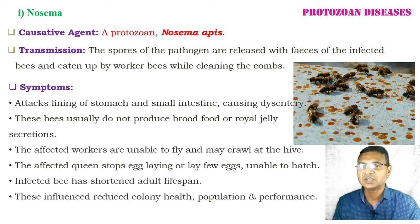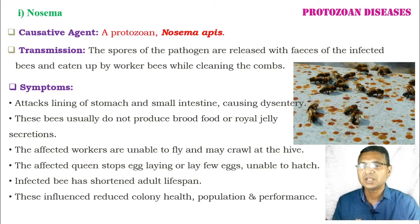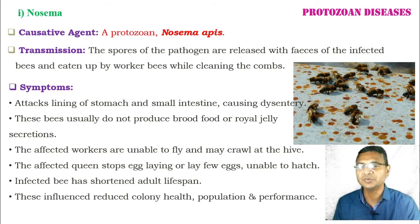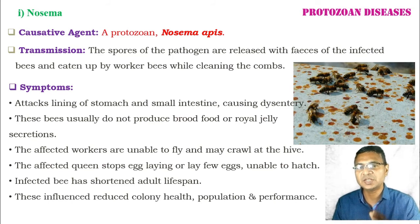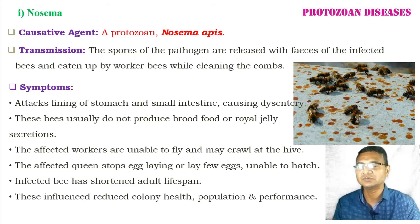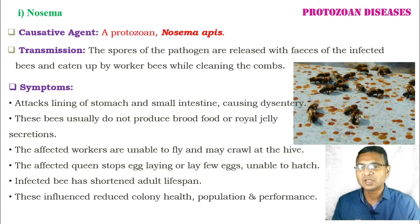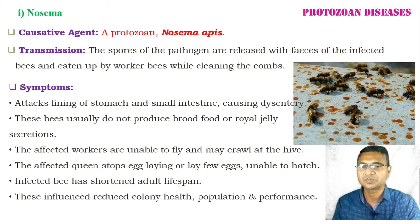The symptoms of Nosema: the protozoan attacks the lining of the stomach and small intestine of adult bees, causing dysentery. Bees are unable to produce brood food or royal jelly. Affected worker bees are unable to fly and may crawl at the hive. The affected queen stops egg laying, or if she does lay, the eggs are unable to hatch. The lifespan of infected bees — whether worker, drone, or queen — becomes very short, influencing the colony population and reducing overall colony health and foraging performance.